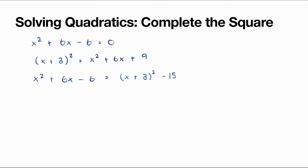This whole expression equals 0, so we're solving (x + 3)² - 15 = 0. We add 15 to both sides to get (x + 3)² = 15. Then we take the square root of both sides — don't forget the ± sign whenever we square root — giving x + 3 = ±√15. Subtracting 3 from both sides gives x = -3 ± √15. Our two answers are -3 + √15 and -3 - √15, which we can put into a calculator to find decimal approximations.